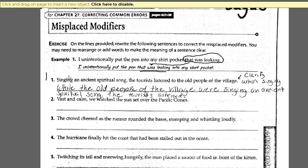Number one: 'Singing an ancient spiritual song, the tourists listen to the old people of the village.' When you have a transitional phrase followed by a comma, the closest thing to it is what's completing that action. 'The tourists' is the closest thing to this transition, so it sounds like the tourists are the ones singing. But they are not — the old people of the village are singing, and the tourists are the ones listening. So we have to move the misplaced modifier to clarify who is actually singing.